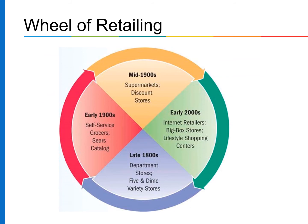The wheel of retailing shows that in the late 1980s, department stores emerged; in the early 1990s, self-service and convenience stores; in the mid-1990s, supermarkets; and in the early 2000s, internet retailers. Retailers go through constant change — new retailers enter the market by offering low prices made possible through reductions in service, and most of these changes follow a wheel platform.